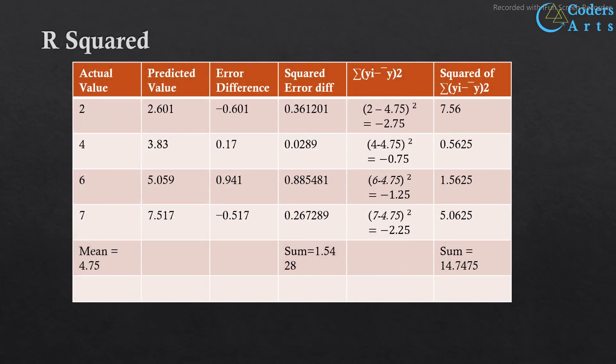R-squared is a statistical measure in a regression model that determines the proportion of variance in the dependent variable that can be explained by the independent variable. In other words, R-squared shows how well the data fits the regression model. R-squared can take any values between 0 and 1.